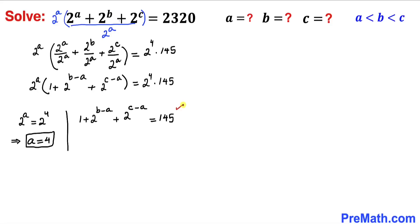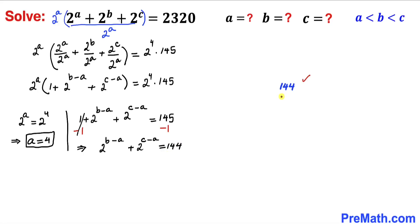Now let's focus on the odd-number equation: 1 + 2^(b−a) + 2^(c−a) = 145. Subtracting 1 from both sides gives us 2^(b−a) + 2^(c−a) = 144. Focusing on 144, we can write it as 16 × 9, and since 16 = 2^4, we get 144 = 2^4 × 9.